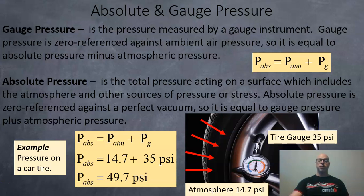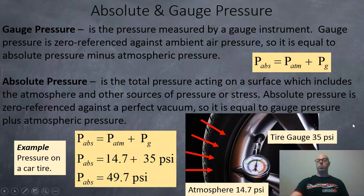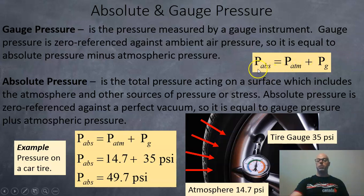Absolute pressure is the total pressure acting on the surface, which includes the atmosphere and other sources of pressure or stress. Absolute pressure is zero-referenced against a perfect vacuum (outer space) and is equal to the gauge pressure plus the atmospheric pressure. So your total pressure on an object equals the atmosphere plus whatever the gauge reads.